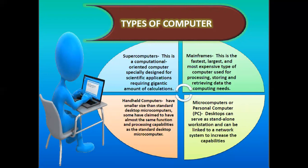Mainframes are the fastest, largest, and most expensive type of computer, used for processing, storing, and retrieving data. They are commonly used in the internet to store and process data. Microcomputers, or personal computers, are the most commonly used. A desktop can serve as a standalone workstation and can be linked to a network system to increase its capabilities. With a network or the internet — like LAN or WAN — we can increase capability through internet connectivity.